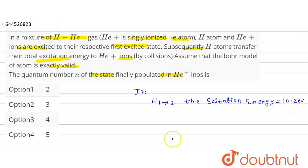So when hydrogen atom transfers their excitation energy, this 10.2 electron volts, the electron in helium plus is further excited to n is equal to n2.